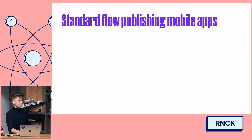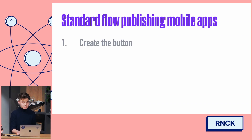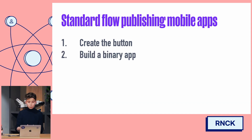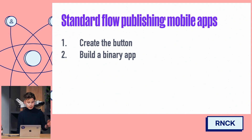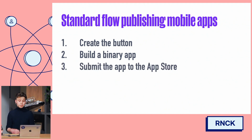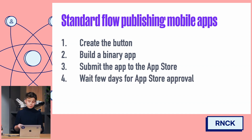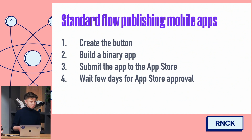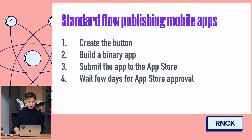Let's take a look at the flow of publishing mobile apps. To publish this change we need to create the button, build a binary app — sticking with an iOS example, we need to use Xcode or EAS to build our app. Then we need to submit it to the App Store. Finally, we need to wait a few days for App Store approval and then for the rollout. This takes a while, and a lot of users have turned off updates.